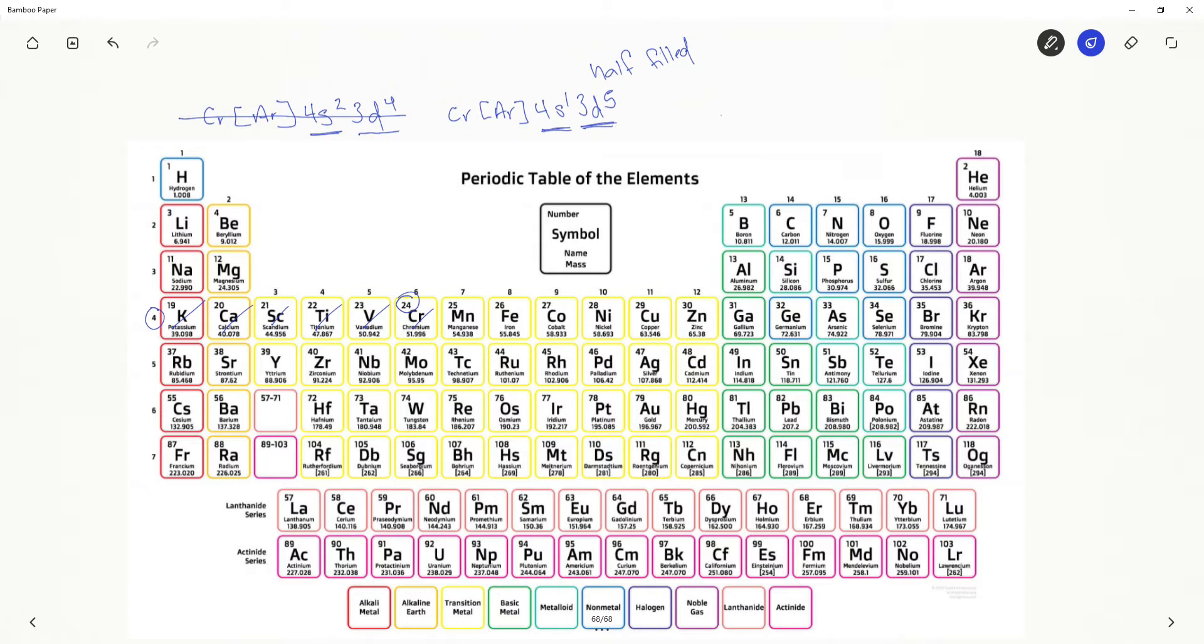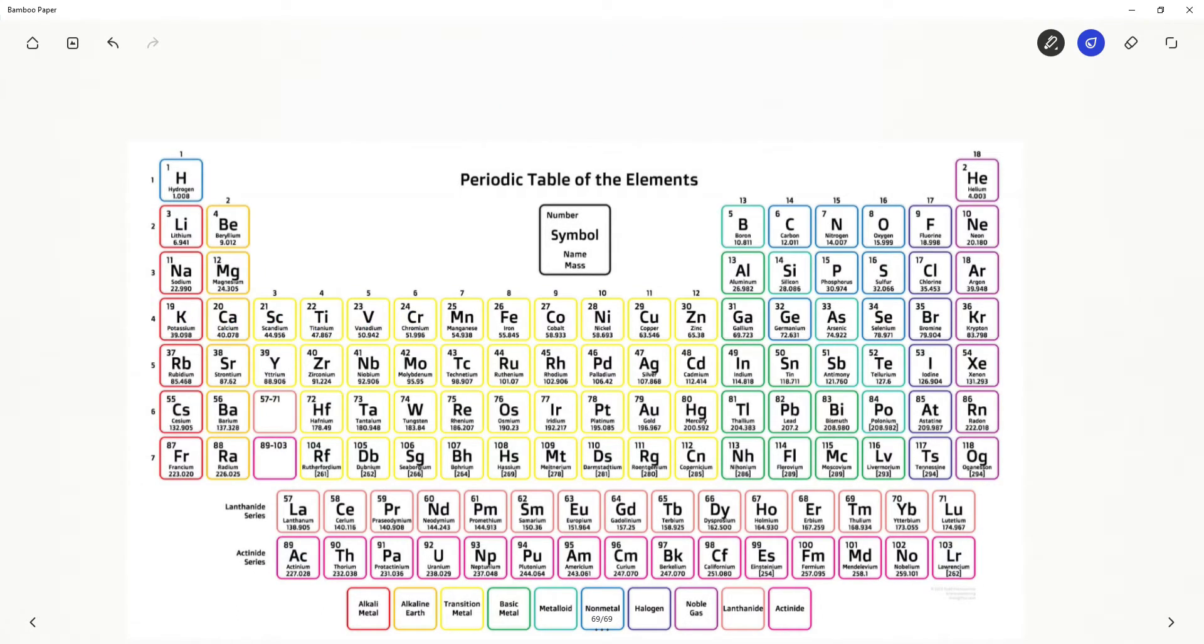Let's clear the periodic table and take a look at some other of these exceptions. This time, let's take a look at silver, atomic number 47. Our expected electron configuration for silver is this.